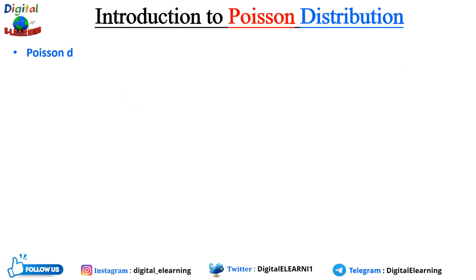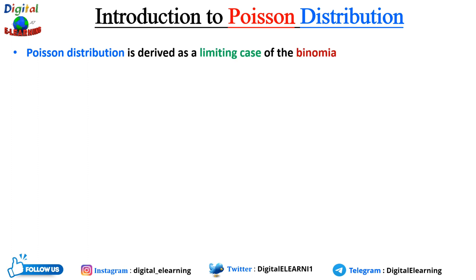Poisson distribution is derived as a limiting case of binomial distribution. It helps us understand the likelihood of different numbers of events happening when we know the average rate of those events.